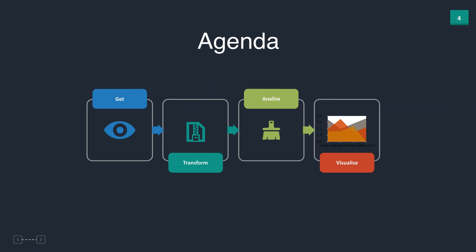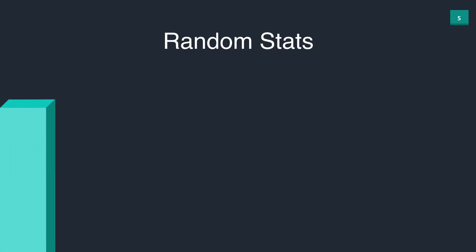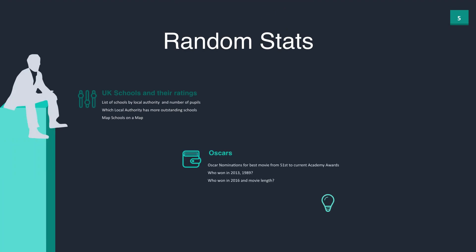We challenged ourselves to do all this in an hour, so let's get started. I'm going to pretend I'm working for an organization called Random Stats. My boss came to my desk and said, 'Hey Prati, within a few hours I need you to create these dashboards.' One is based on UK schools and their ratings data — a total list of schools by local authority, how many pupils are in each school, how many outstanding schools there are, and how to visualize schools on a map.